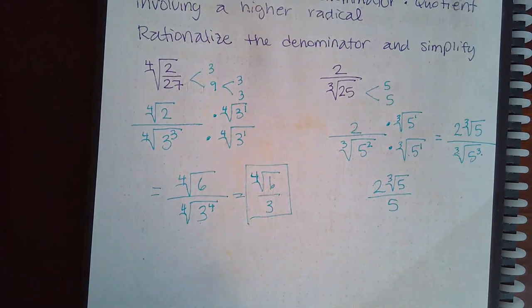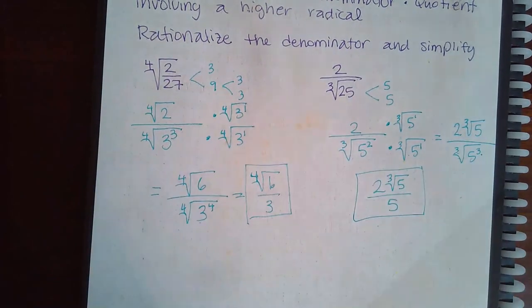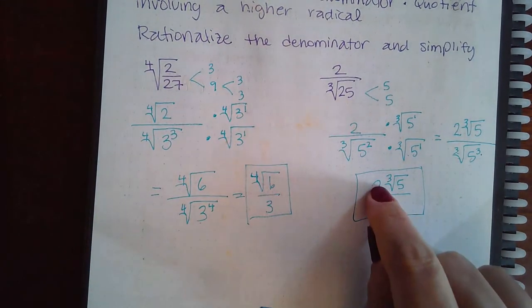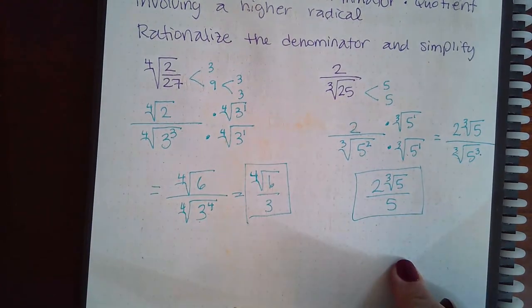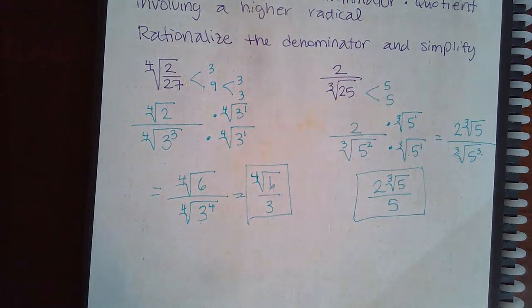And that's the end of rationalizing that. Now if this 2 and this 5 could have been simplified then I would have had to have done that, but 2 and 5 do not reduce so I'm done for that problem.